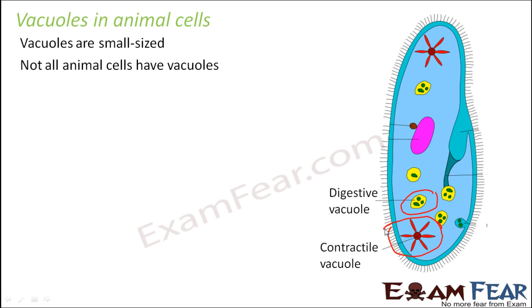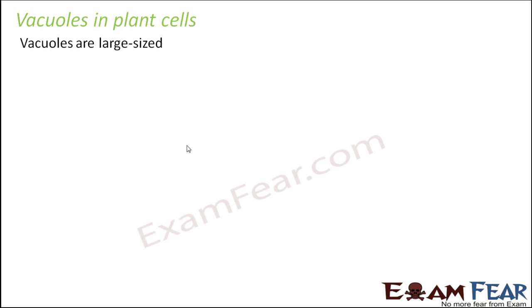Similarly, in Amoeba there is a contractile vacuole. So the presence of a vacuole in animal cells depends on whether it is there or not, and if it is there, whether it is used for excretion, storing food, or engulfing food - that depends from one cell to another.